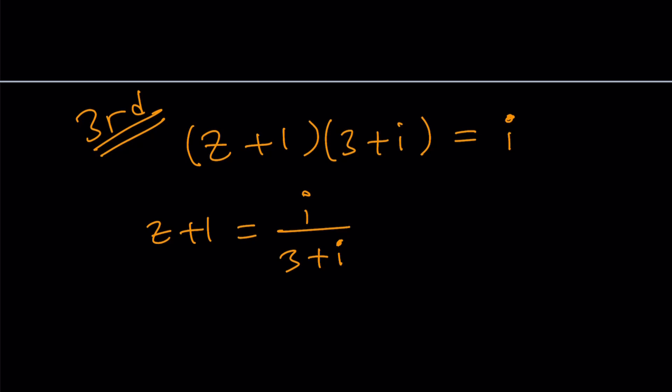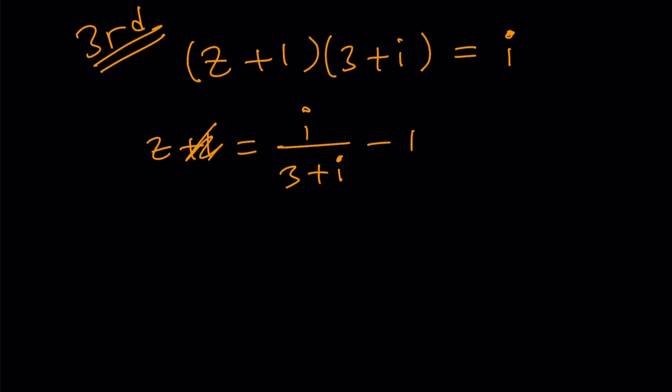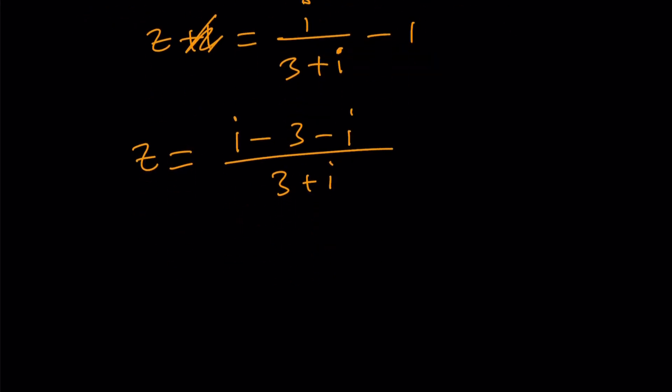Subtract 1 and then you'll get Z. That's it, but let's make a common denominator. I minus 3 minus I divide by 3 plus I. And that should give us, the I cancels out. And we end up with Z equals negative 3 over 3 plus I.